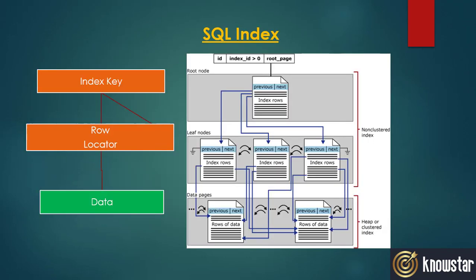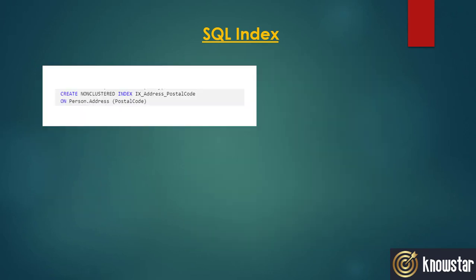The other type of index is a non-clustered index. In a non-clustered index, the base data is stored as a separate entity. Instead, there are row locators or pointers that point to the base data at the leaf level. The base data itself can be stored in two different ways: in an unordered structure as a heap, or as a physically sorted clustered key index. If it is a heap structure, the row locators will point to the base table data records. In case of a clustered index structure, the row locators will point to the clustered index keys. Since the base data is separated from the index structure, we can have any number of non-clustered indexes on a table.